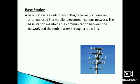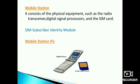A mobile station consists of physical equipment such as a radio transceiver, digital signal processor, and the SIM card. SIM is an abbreviation of Subscriber Identity Module. This is an example picture of a mobile station.